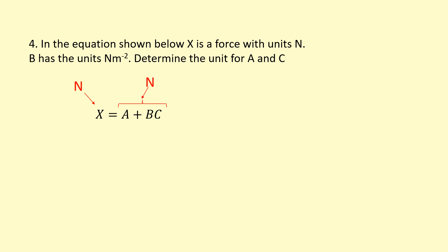That means when you're adding A and B times C, each individual component should also have the unit of newtons as well. This is because of the rule that you can only add and subtract quantities that have the same unit.